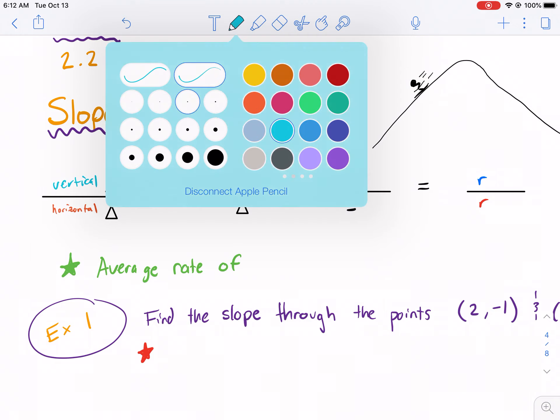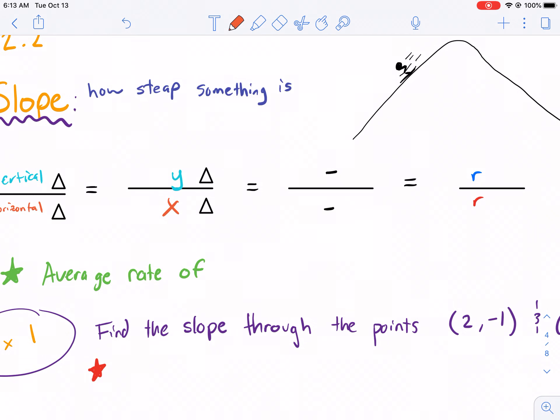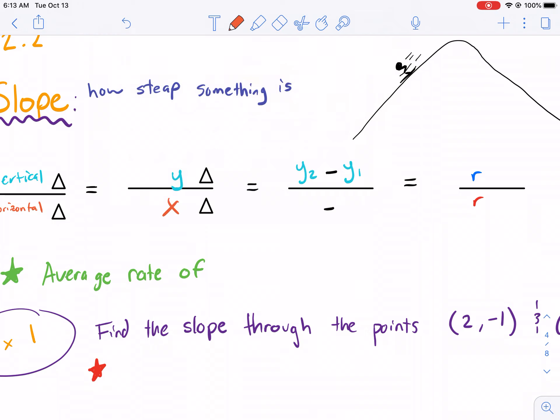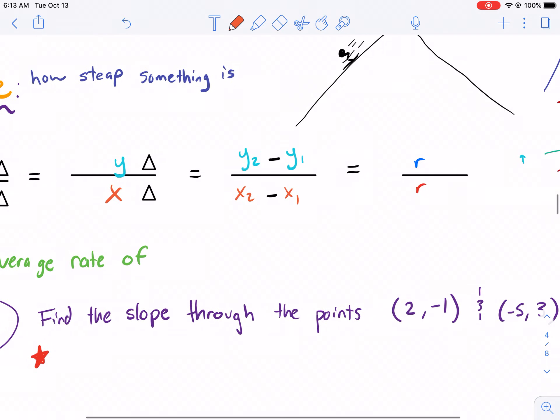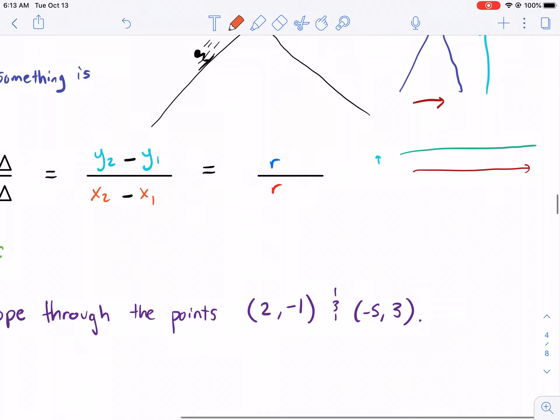So vertical, again, what is that in terms of mathematics? It is the change in Y over the change in X. X is our horizontal axis. Y is our vertical axis. How do we find the change in Y? Well, you may remember the distance formula. We talked about Y2 minus Y1. You can honestly do Y1 minus Y2 as long as you are consistent on the top and bottom. So if I'm doing Y2 minus Y1, I also need to do X2 minus X1 in the bottom.